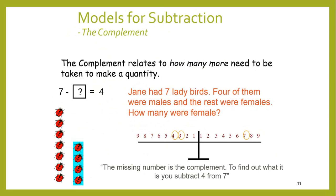We can also look at the complement: how many more need to be taken to make a quantity? Jane had 7 ladybirds; 4 of them are male and the rest were female — how many were female? So how many do we need to add on to the 4 to get the 7? This missing number is called the complement, and to find its value we need to subtract 4 from 7.